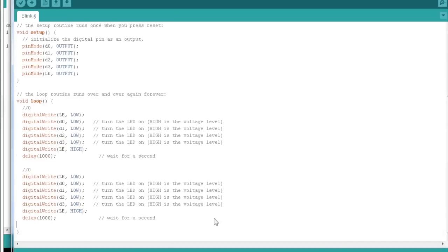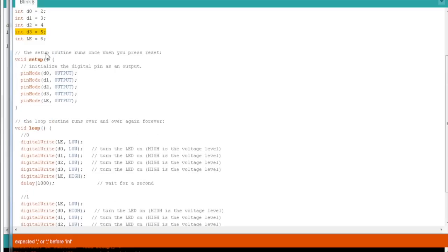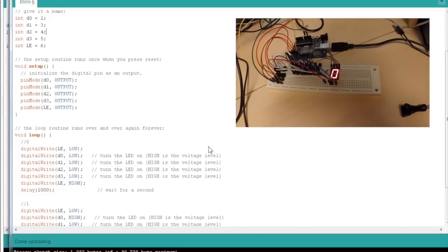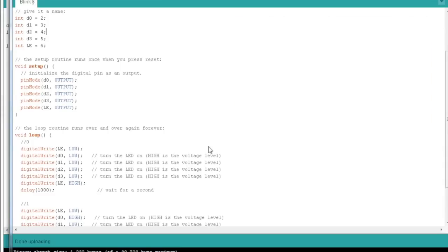Let's make a 1 as well. Let's now upload this to the Arduino. And it switches between a 0 and a 1. So, let's do this for all the other numbers as well.